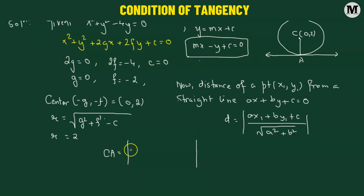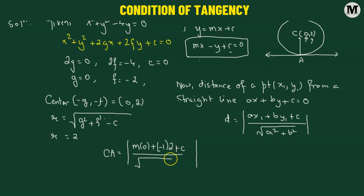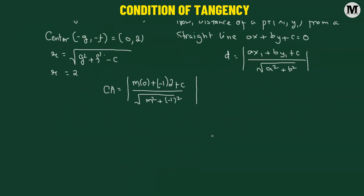Starting with the coefficient of x, that is m, multiplied by the x-coordinate of the center, which is 0. Then we add the coefficient of y, which is negative 1, multiplied by the y-coordinate of the center, which is 2. We add the constant c, and divide by the square root of m squared plus negative 1 squared. Since CA is the radius, we substitute 2, giving us: 2 equals the absolute value of c minus 2, divided by the square root of 1 plus m squared.